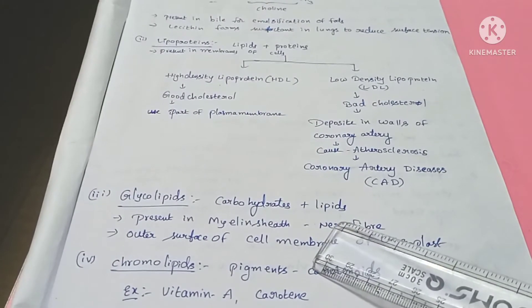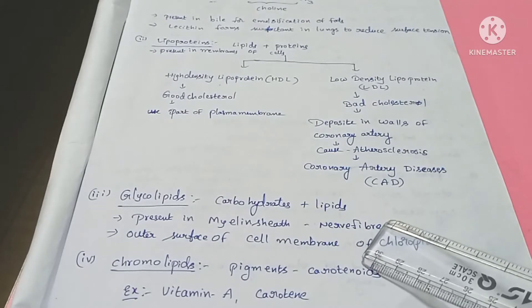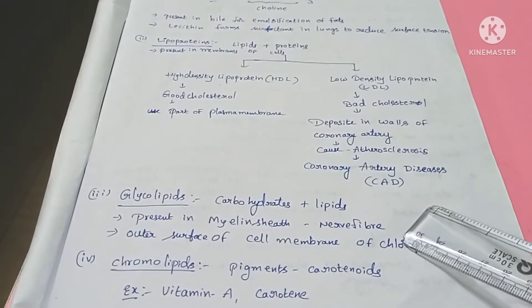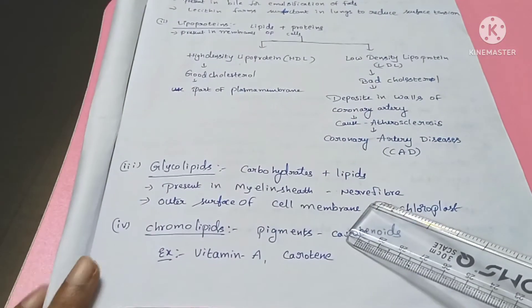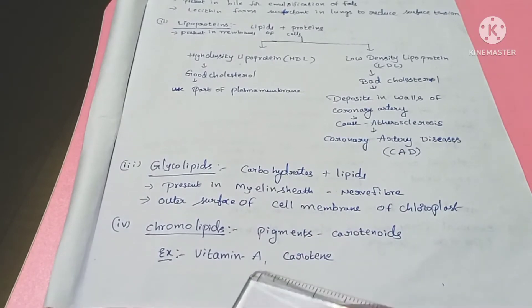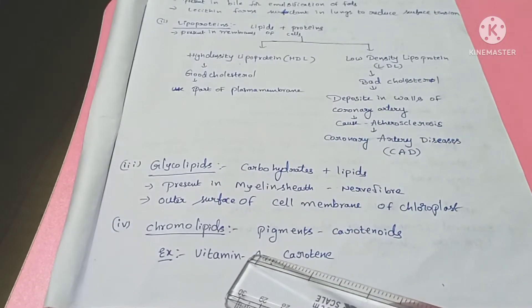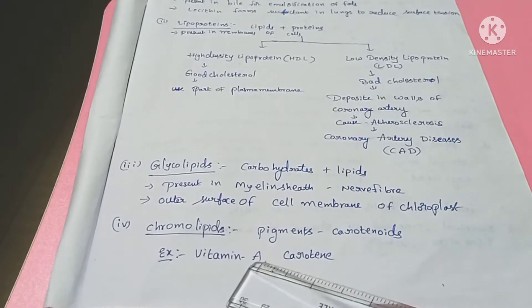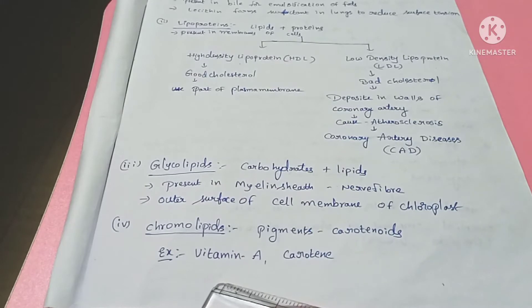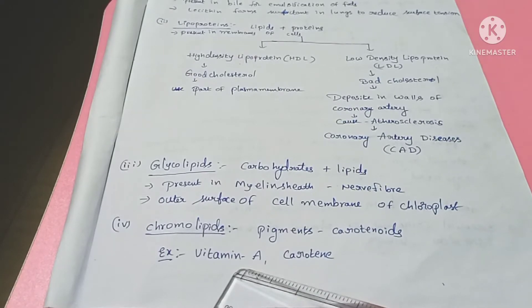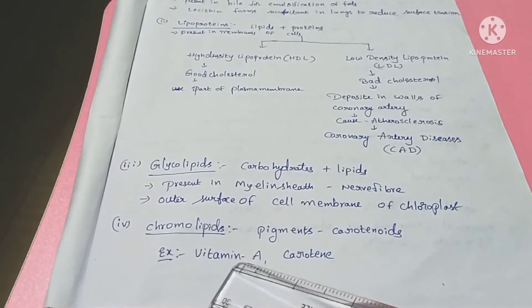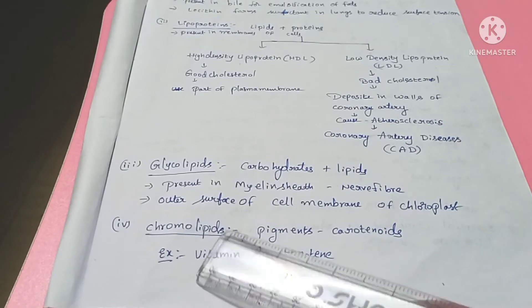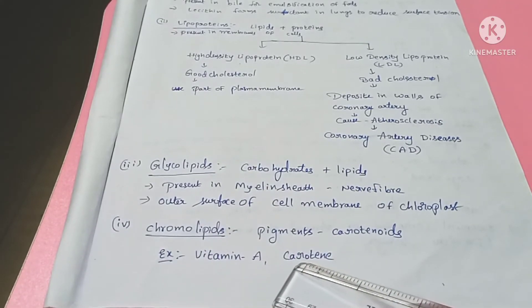Next is chromolipids. 'Chromo' means color and pigment, so chromolipids are lipids that are colored pigments. An example is carotenoids, which include vitamin A and carotene. These are fat-soluble vitamins. Fat-soluble vitamins include vitamins A, D, E, and K, while water-soluble vitamins include B-complex and vitamin C.